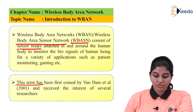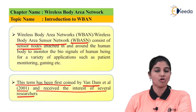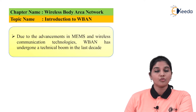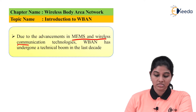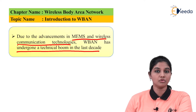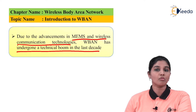This term was first used by WAN DAMP in 2001 and received the interest of several researchers. Wireless body area network was invented in 2001 by the scientist or researcher named WAN DAMP. Because of the development and advancement in MEMS technology as well as wireless communication technology, wireless body area network has undergone a technical boom in the last decade. We can use it for applications like gaming and wearable devices.